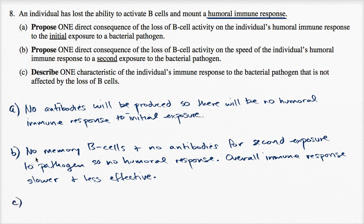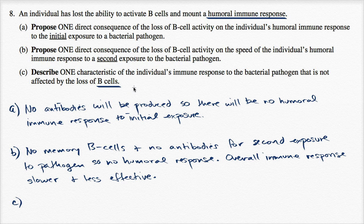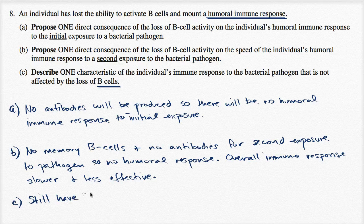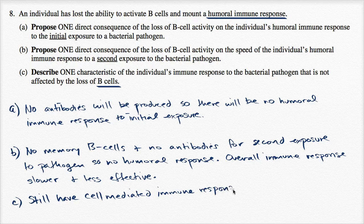Part C asks us to describe one characteristic of the immune response that is not affected by the loss of B cells. B cells are all about the humoral immune response — tagging things with antibodies and having memory B cells for a quicker second response. But that's not the only part of our immune system. You still have the cell-mediated immune response, including phagocytes that will go and engulf the pathogens.